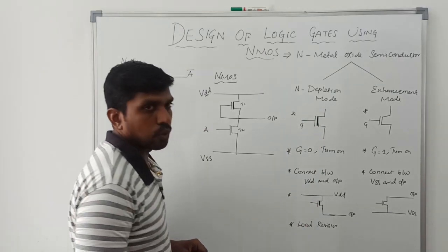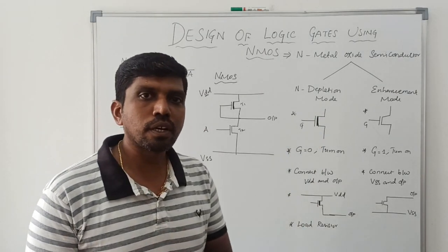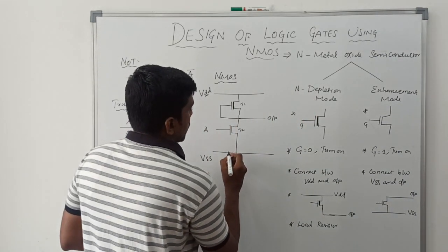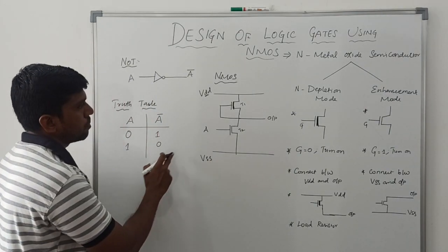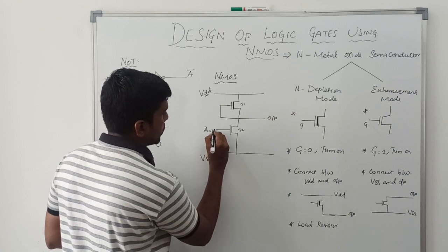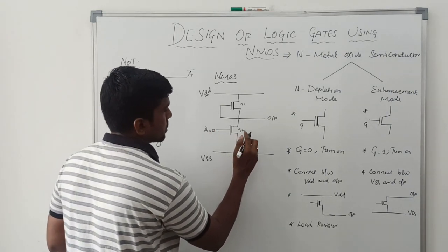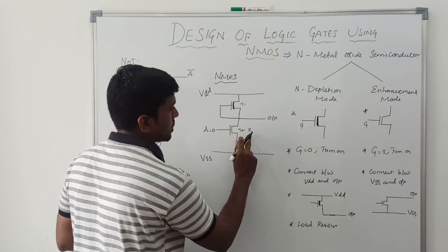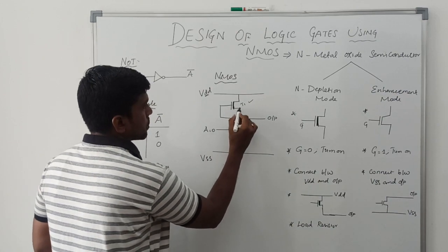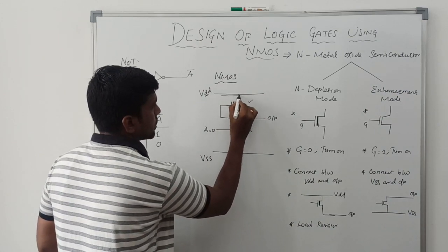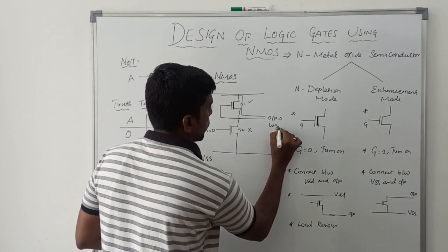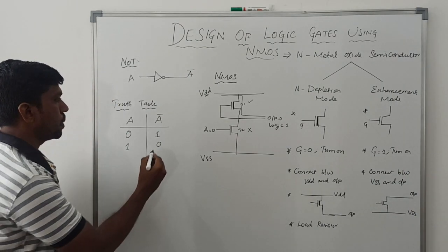The depletion mode transistor acts as a load resistor and is almost always turned on. Now I verify the truth table with this NMOS logic circuit. When the input value is 0, T2 is turned off. T1 is turned on, so VDD is directly connected to the output — the output is logic 1.